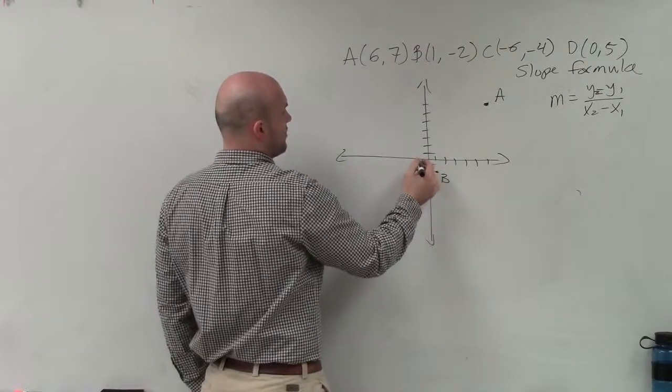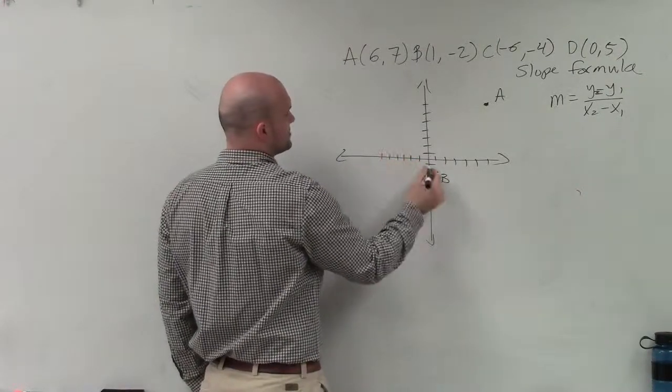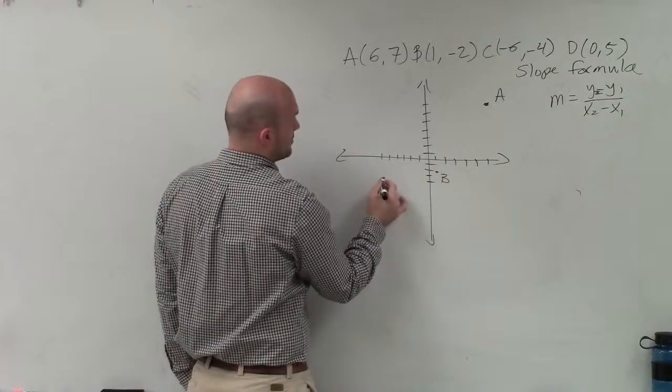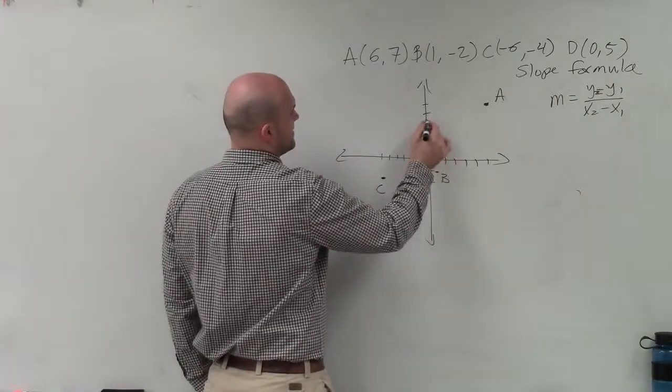Point C is (-6, -4). Counting: 1, 2, 3, 4, 5, 6, and 1, 2, 3, 4. And point D is (0, 5). Counting: 1, 2, 3, 4, 5.